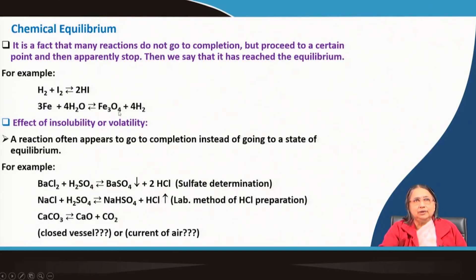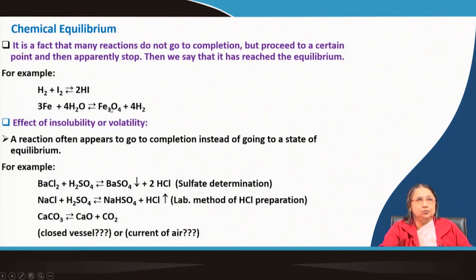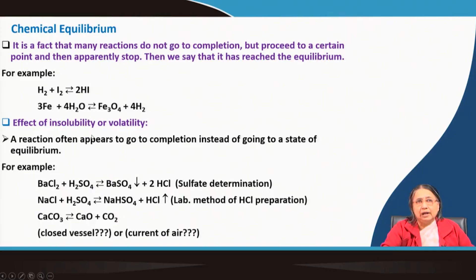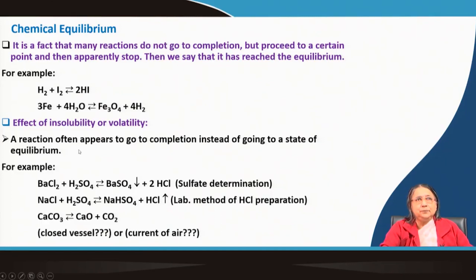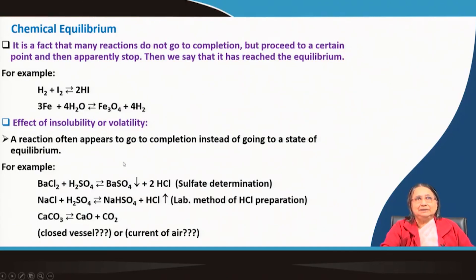Some reactions we need to drive to 100% conversion — for example, for analytical purposes. A reaction often appears to go to completion instead of reaching equilibrium. The question is: how and under what conditions can we achieve complete conversion? For instance, barium chloride reacting with sulphuric acid produces barium sulphate as a precipitate, along with HCl.